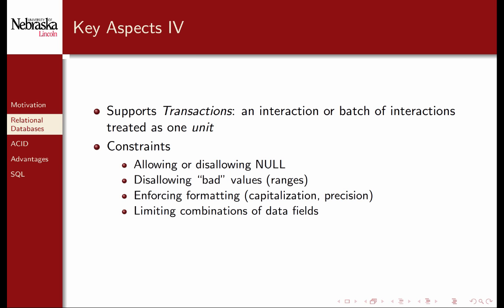Relational database management systems also provide support for transactions. A transaction is an interaction or batch of interactions with the database treated as one atomic, indivisible unit of work. A transaction is how we interact with the database to manipulate or query data. Such systems also provide data integrity by allowing you to define constraints. You can define constraints to allow or disallow missing null values, or to ensure that numerical values are not negative, for example. There are various types of constraints depending on the database system, which can be quite sophisticated.